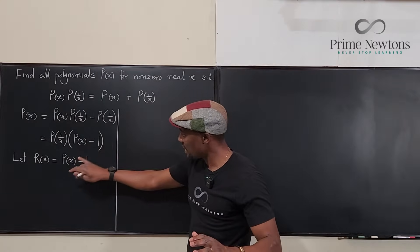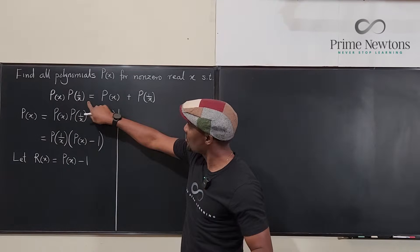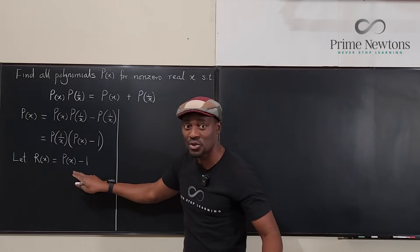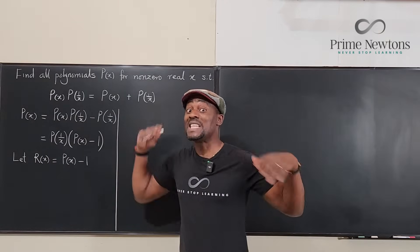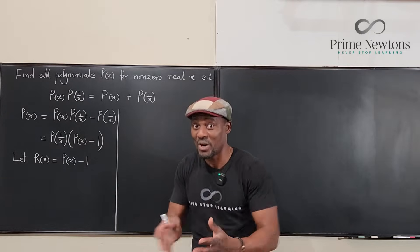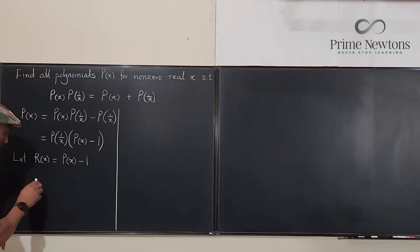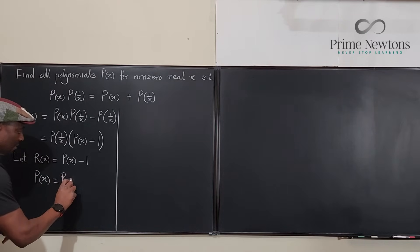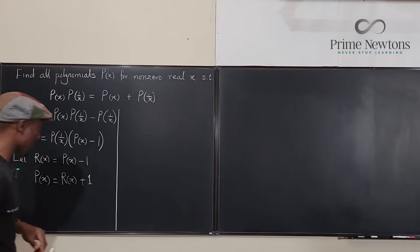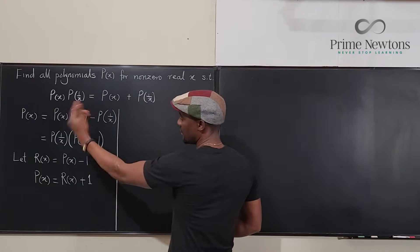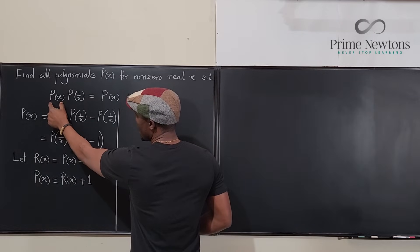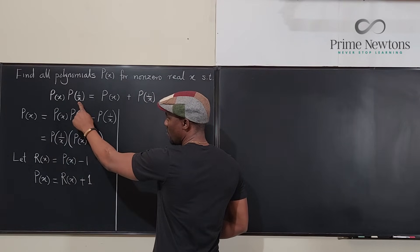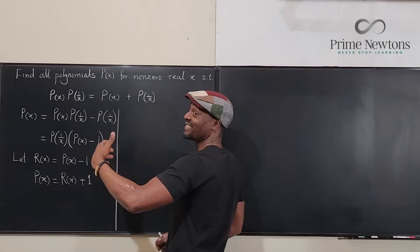If P(x) minus 1 equals R(x), I want to go back to the original equation and replace P(x) in terms of R(x), because then we'll see a behavior that restricts whatever we're thinking. So P(x) becomes R(x) plus 1. The left-hand side of the original equation is now R(x) plus 1 times R(1/x) plus 1.